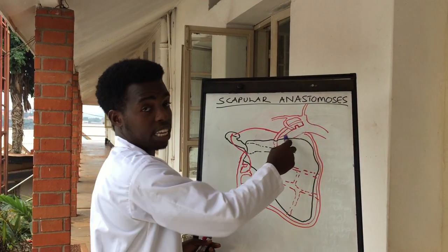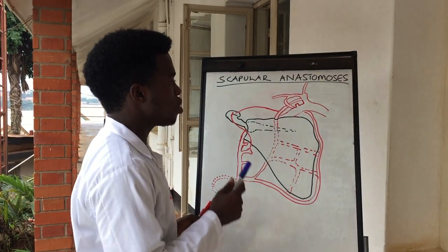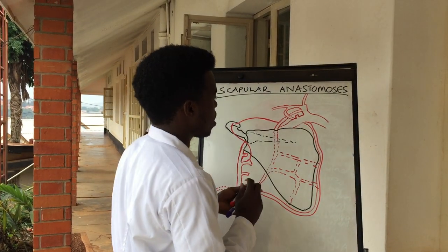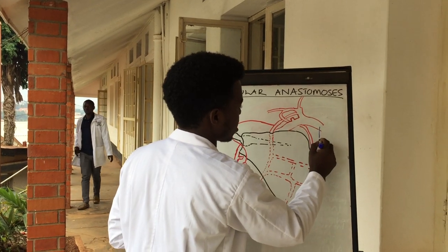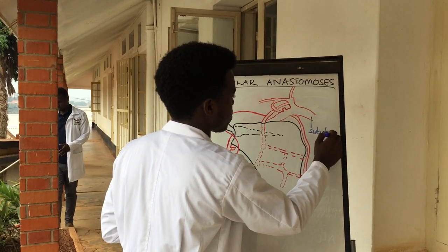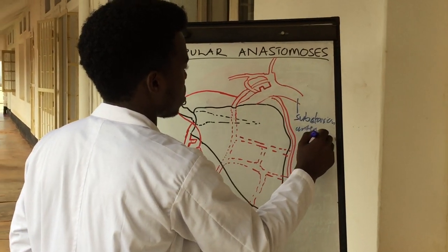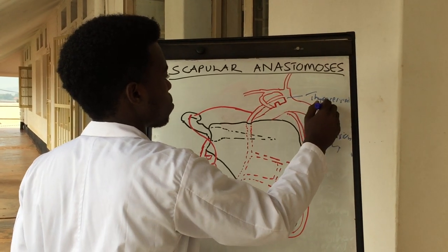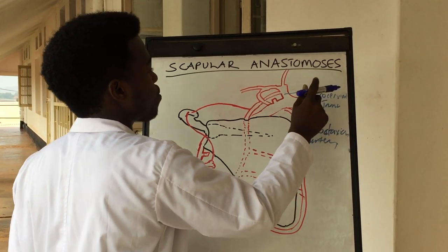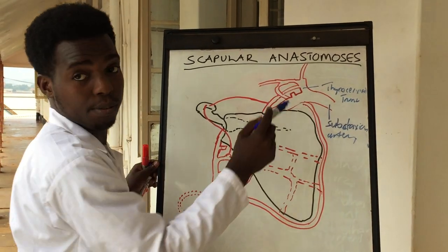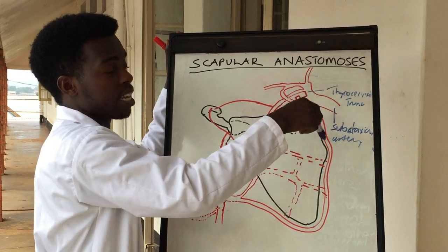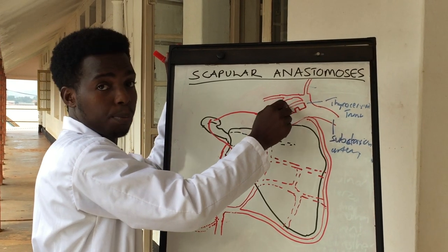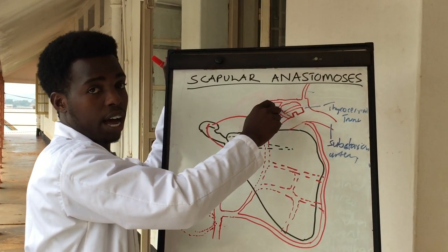The subclavian artery gives us three main divisions, but now we are going to concentrate on the suprascapular artery, which is derived from the thyrocervical trunk. From this thyrocervical trunk we see that there are important tributaries. We have the suprascapular artery and the dorsal scapular artery.